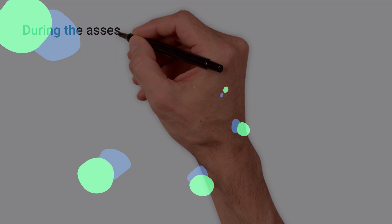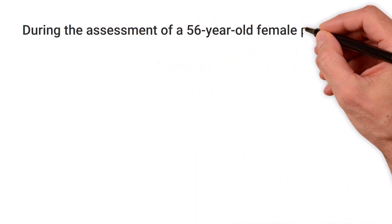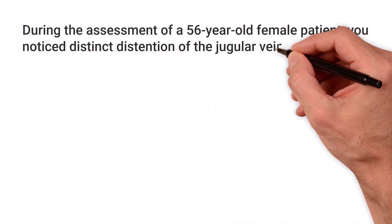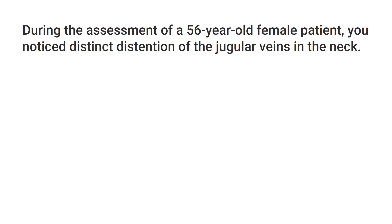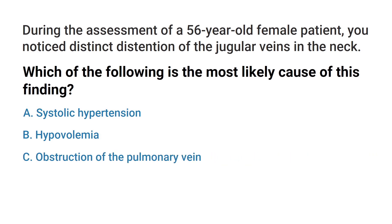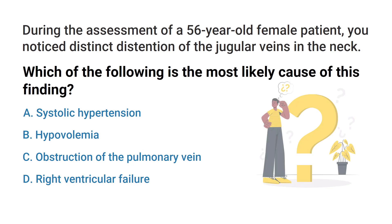During the assessment of a 56-year-old female patient, you noticed distinct distension of the jugular veins in the neck. Which of the following is the most likely cause of this finding? A) systolic hypertension, B) hypovolemia, C) obstruction of the pulmonary vein, or D) right ventricular failure. Do you know the answer? Let's break it down.